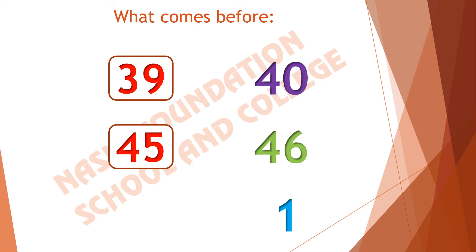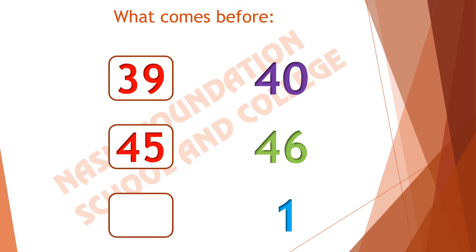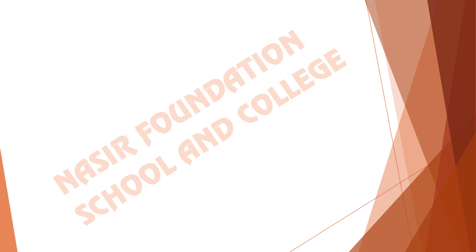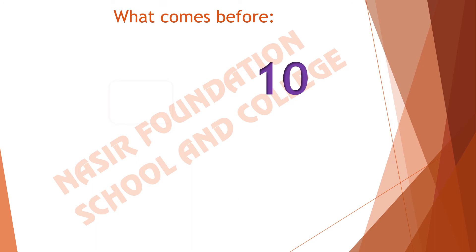Here we have the next number 1. What comes before 1? Subtract 1 from 1, what will we get? We get 0. If you have 1 chocolate and I take 1 chocolate from you, how many chocolates do we have now? 0 chocolates. So, if we subtract 1 from 1, we get 0. Here we have the next number 10. What comes before 10? Subtract 1 from 10 and tell me the answer. The previous number is 9. If we subtract 1 from 10 we get 9. Before 10 it comes 9.